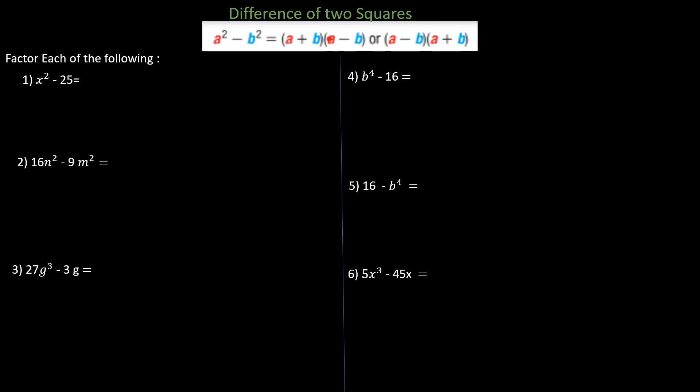Let's start directly factoring each of the following. Remember that when we factor any polynomial, we have to find the greatest common factor first. In this case we don't have a GCF, so we go directly to the difference of two squares. We need to find the square root of the first term and the square root of the second term. The positive square root of x squared is x, and the positive square root of 25 is 5, so the answer will be x minus 5 times x plus 5.